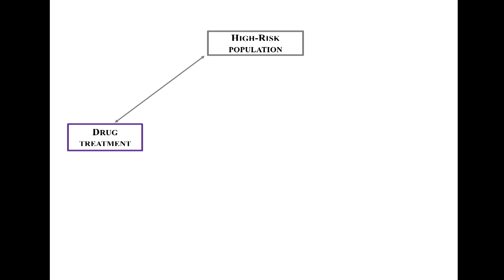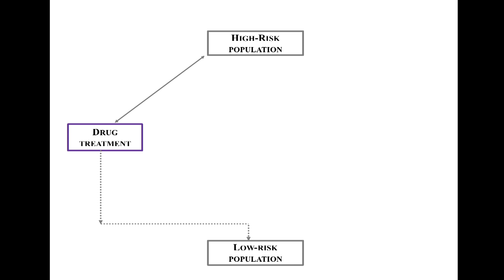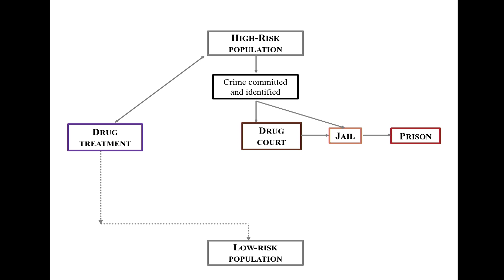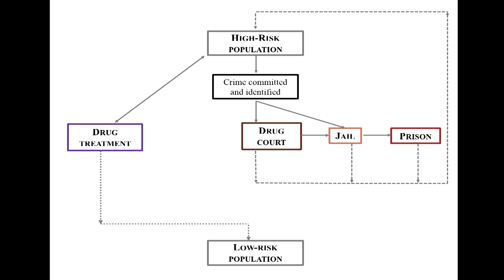What about the structure of the model — how do people move through this system? We start with a high-risk population; ideally people get into drug treatment, inject less or not at all, and move into a low-risk population where they're less likely to die from overdose or transmit disease. At any time, people can commit crimes, and their propensity to do so is a function of their individual risk behaviors. If a crime is identified, people can move into drug court or jail; if their sentence is greater than a year, they can move into prison. Eventually they flow back into the injecting population — we see very little evidence that these societal deterrents interrupt patterns of risk behavior, so this is an abstraction of the incarceration and transmission cycle.